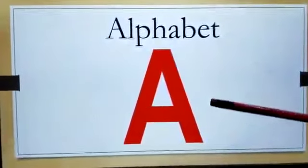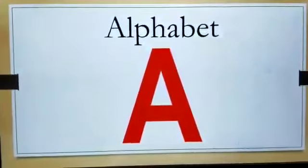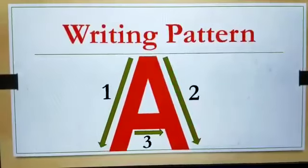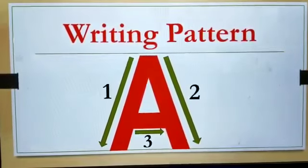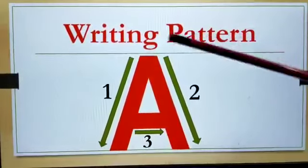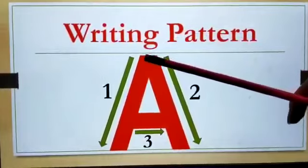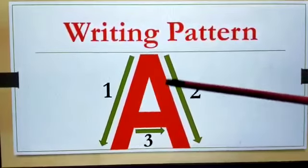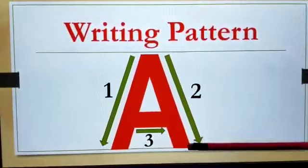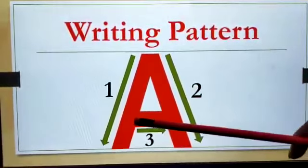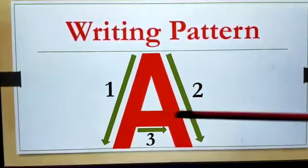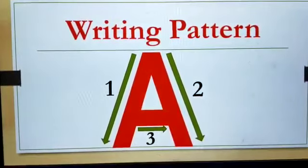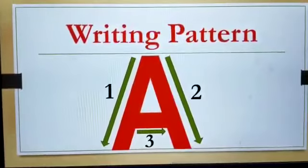This is alphabet A. Now learn how to write alphabet A. First make a slanting line. Then make another slanting line. And make a sleeping line from the middle. And our A is ready.